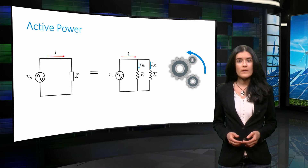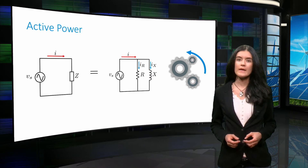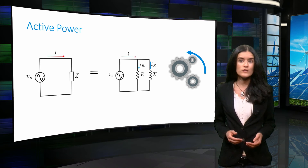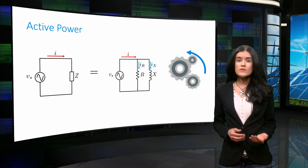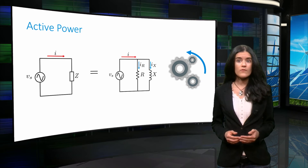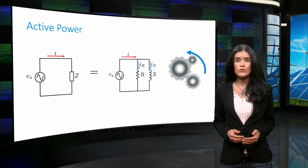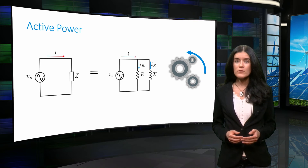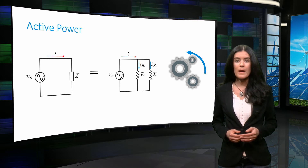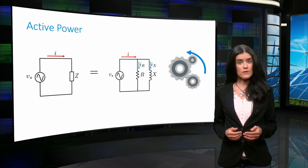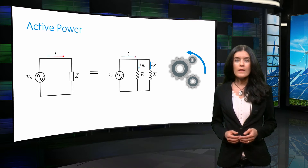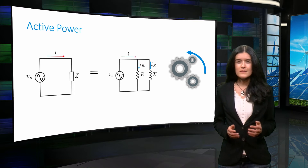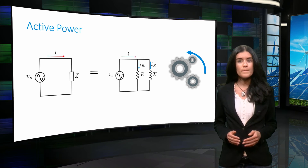Active power is the usable power. It is the portion of power that produces a net transfer of energy, done once every cycle. The load is able to use this power to do work. In DC, the power supplied by the load is the same power that is transferred towards the load, when no losses are assumed. In AC, this is just a portion of the total power per cycle.